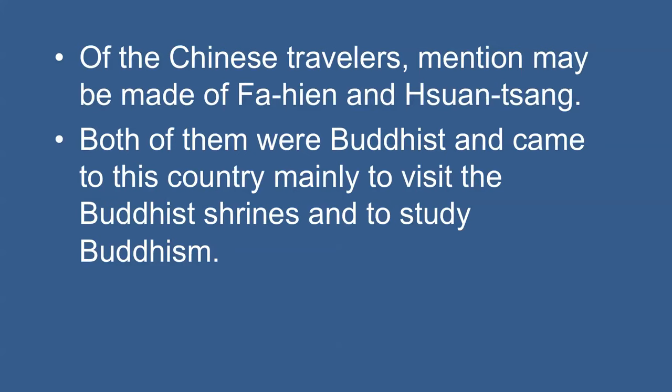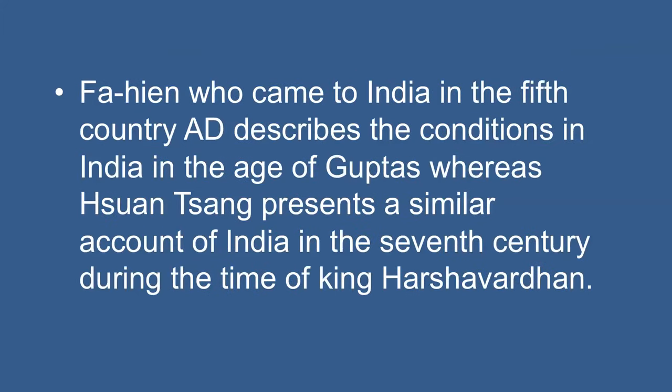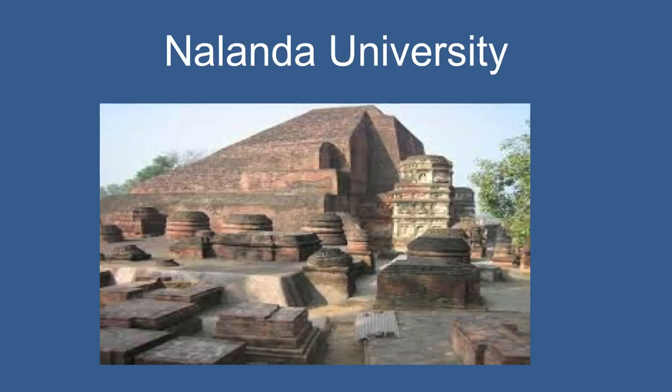Of the Chinese travelers, mention may be made of Faxian and Xuanzang, both of whom were Buddhist and came to this country mainly to visit Buddhist shrines and to study Buddhism. Faxian, who came to India in the 5th century AD, described conditions in India in the age of the Guptas, whereas Xuanzang presents a similar account of India in the 7th century during the time of King Harshvardhana. Xuanzang also described in detail the glory of Nalanda University during this period.